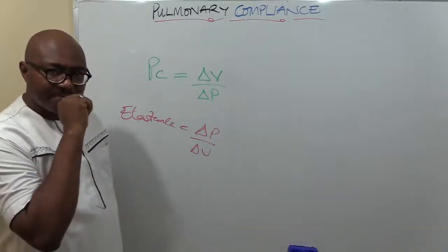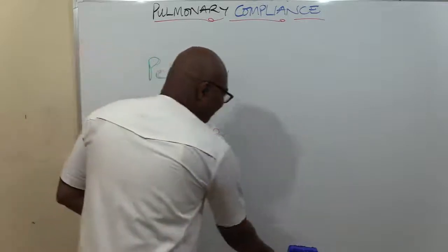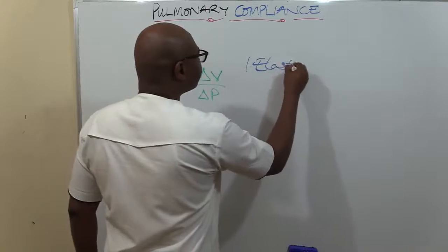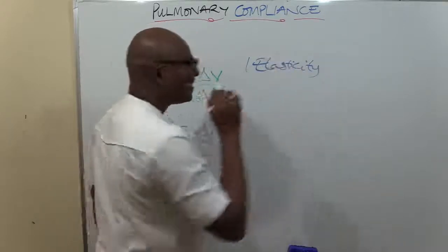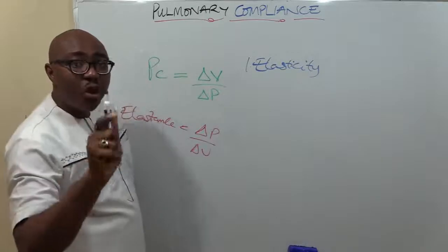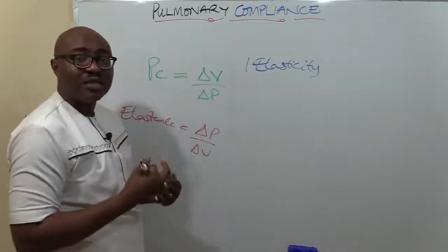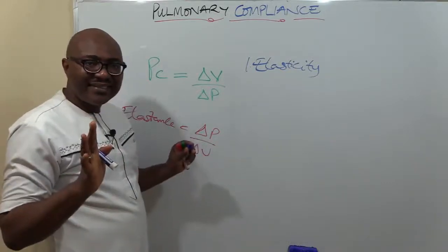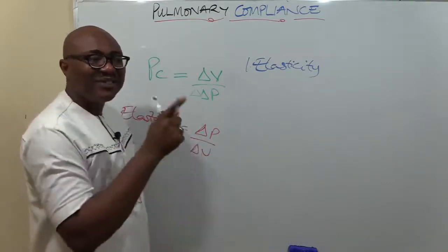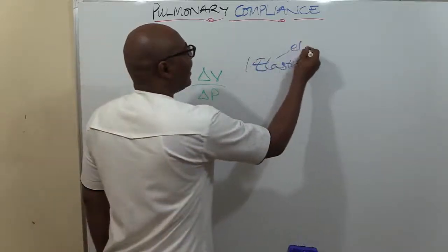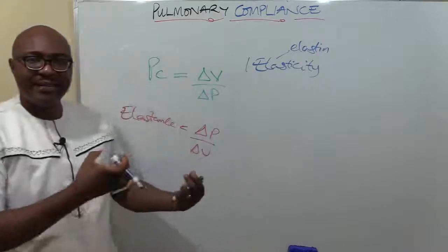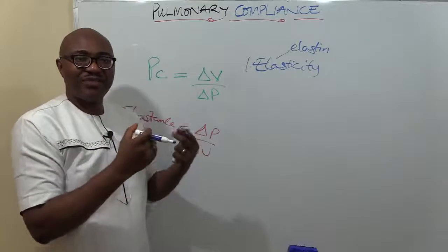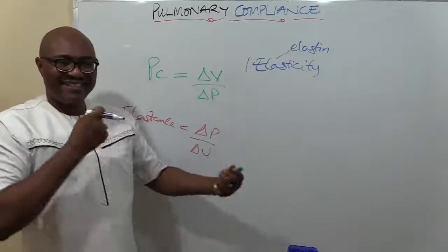What determines pulmonary compliance? There are two major factors. Logically, one of them is elasticity. The elasticity of the lungs itself - the lungs, the substance of the lungs, is made up of elastic fibers, made from the protein called elastin. It's just like a rubber band.